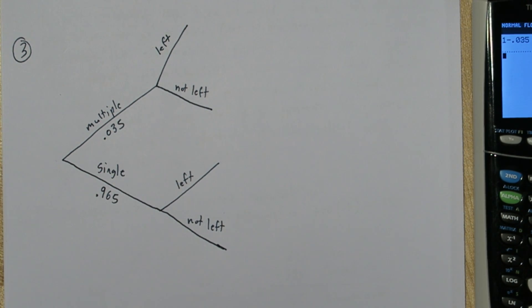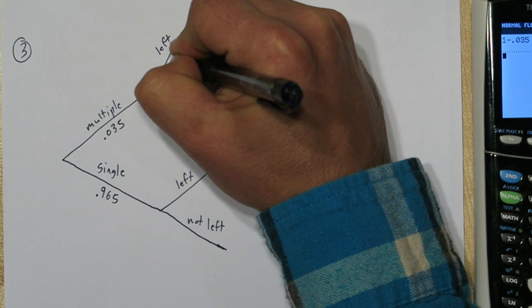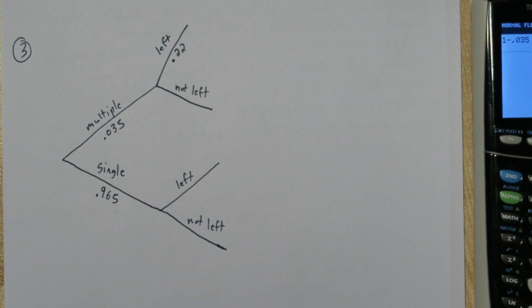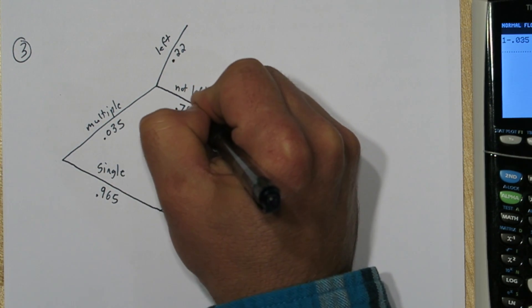Now they tell us if you're a multiple birth the probability of left is 0.22. That means the probability of not left for a multiple birth, once again by finding the complement, would be 0.78.